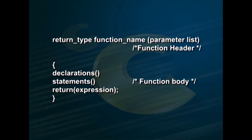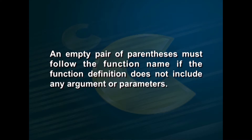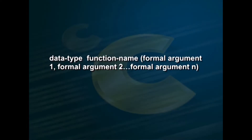The general format for defining a function is: return type, function name with a parameter list in parentheses — this is called the function header — followed by curly braces containing declarations, statements, and a return expression — this is called the function body. The first line of a function definition contains the data type of the information returned by the function, followed by the function name and a set of arguments or parameters separated by commas and enclosed in parentheses. The set of arguments may be omitted. The data type can be omitted if the function returns an integer or a character. An empty pair of parentheses must follow the function name if the definition includes no arguments. The general form is: data_type function_name(formal_argument_1, formal_argument_2, ..., formal_argument_n). For example: int swap(int a, int b).